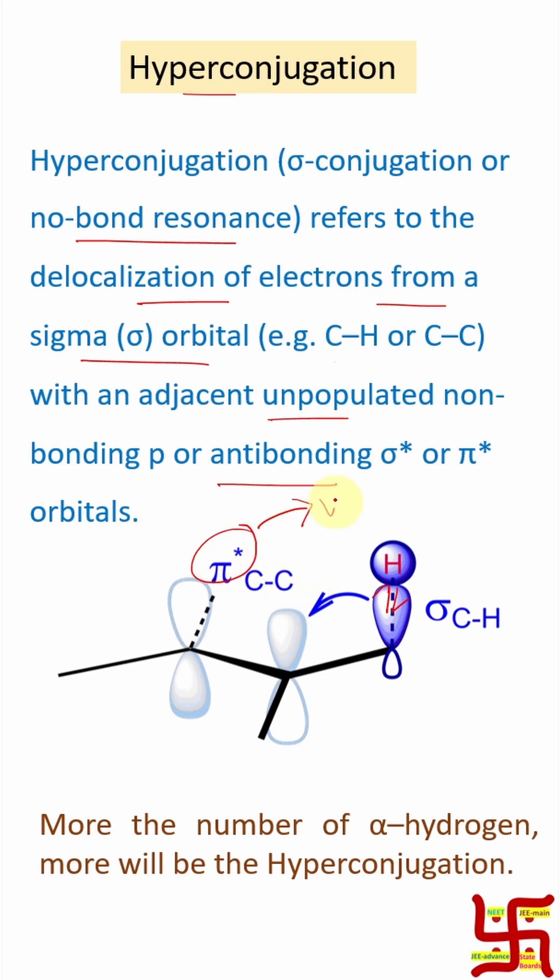These two electrons will be delocalized into the pi star of carbon-carbon double bond. By the way, remember pi star orbital is vacant. That's why this electron density in the C-H bond means two electrons could be delocalized here.